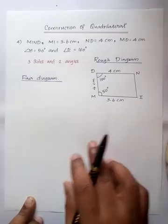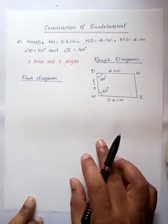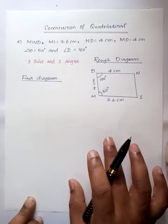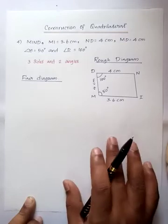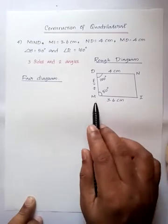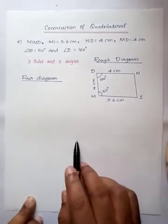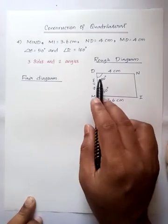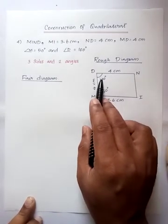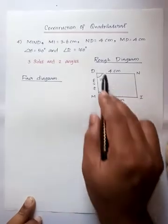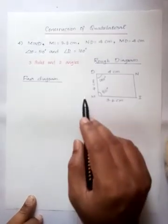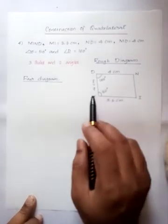Now first we choose which side we have to draw. MI is equal to 3.6 centimeter, then angle 100 degrees - it is a little complicated. That is why we choose MD. MD is the base.